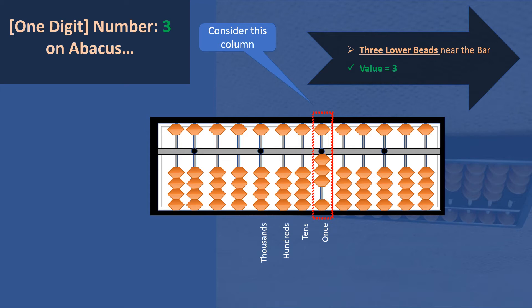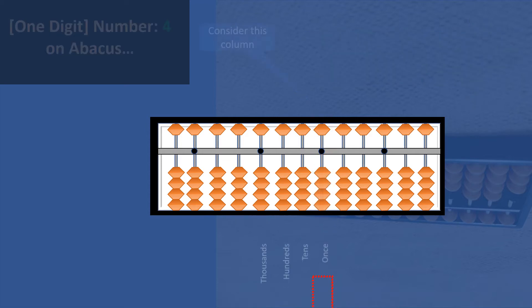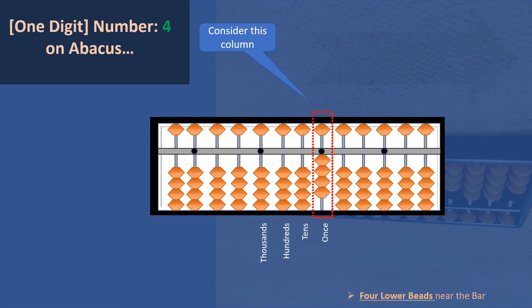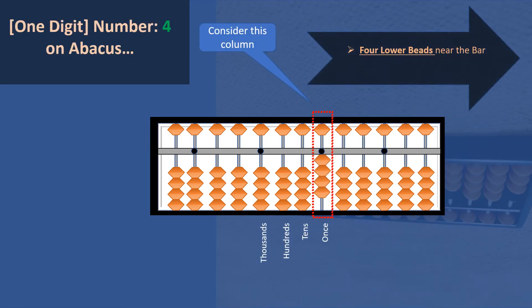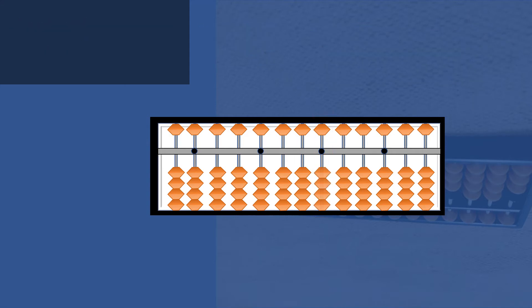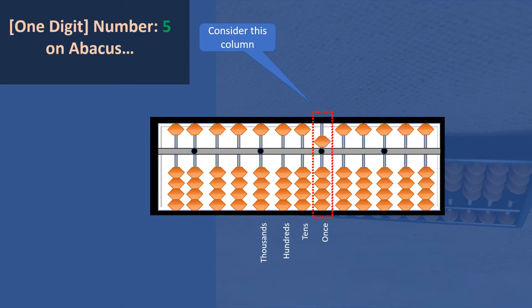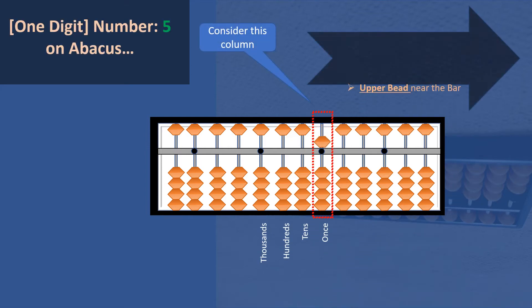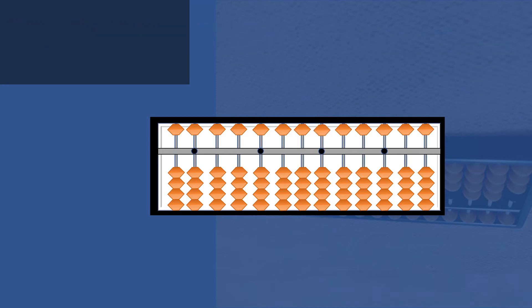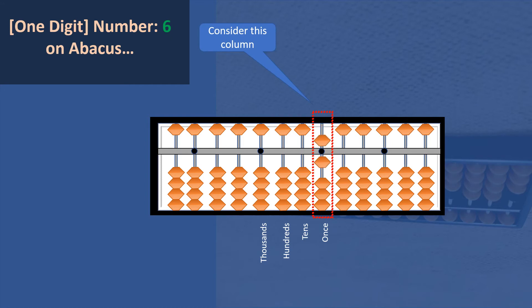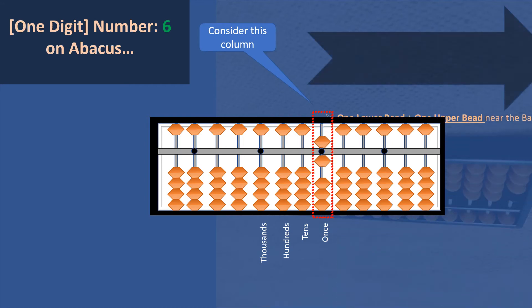How to write three: three beads are moving towards the bar — these are lower beads and each has a value of one, so three beads towards the bar gives a value of three. How to write four: four beads have moved towards the bar, so the value is four. How to write five: the upper bead has moved towards the bar, so the value is five.